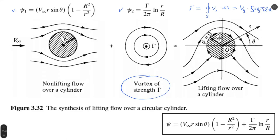Once we introduce circulation in this way, we can simulate a cylinder rotating inside the flow with surface velocity Vs, which can be any value. We receive a picture of streamlines equivalent to the lifting flow over cylinder equation — the stream function written in polar coordinates — which can be visualized as contour lines.